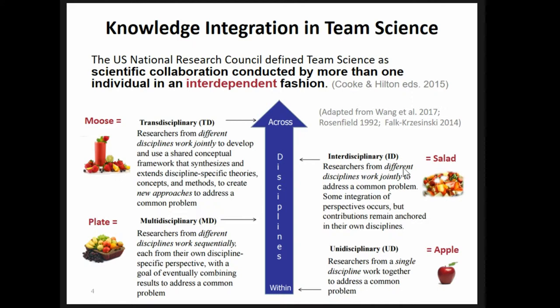Some integration of perspectives occurs in interdisciplinary research, but contributions remain anchored in each discipline's own field. That is our current status. Our future direction is transdisciplinary research — like a mousse — where researchers from different disciplines and social stakeholders work jointly to develop and use a shared conceptual framework, extending different basic theories, concepts, and methods to create new approaches to address a common problem. That is the stage we are now pursuing.